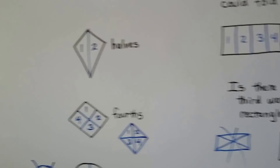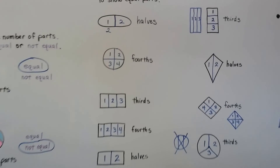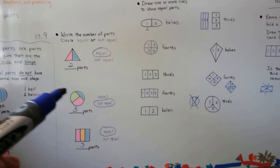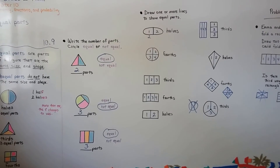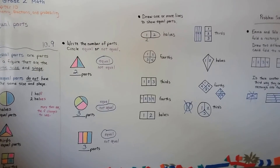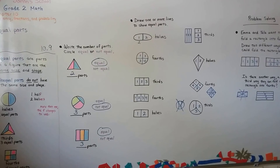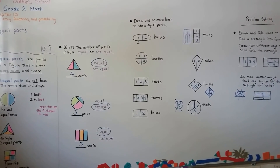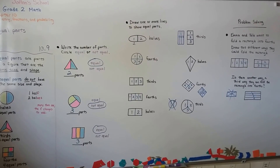Just remember: equal parts means they're the same size and shape. You can't have some that are one size and some that are another — that's not equal parts. Equal means it's the same. We're going to continue talking about equal parts and fractions, and I hope I'll see you at the next video. Bye!